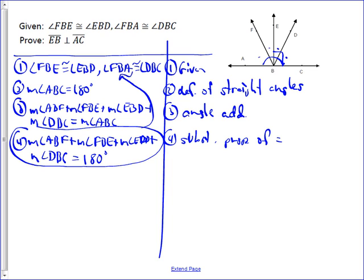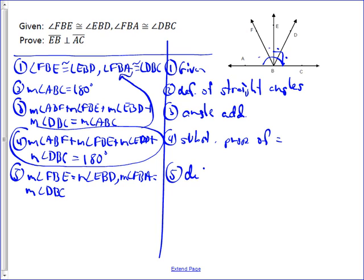So, that's what I'm going to do. But before I do that, I have to remember that I can't substitute congruence into equality. So, I first need to change those given statements into equality. And I need to say that the measure of angle FBE is equal to the measure of angle EBD, and the measure of angle FBA is equal to the measure of DBC, and that's just by definition of congruent angles.